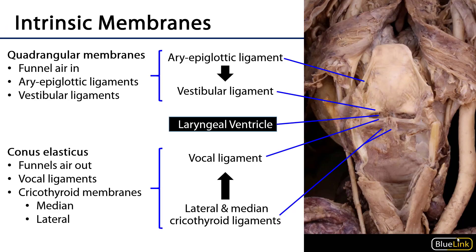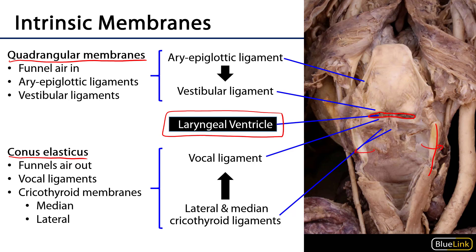There are two intrinsic laryngeal membranes: a pair of quadrangular membranes which rest superiorly, and a singular conus elasticus which rests inferiorly. It's worth noting that these two sets of membranes are separated by the laryngeal ventricle — this space here separates the quadrangular membranes above from the conus elasticus below. The posterior wall of the larynx has been incised and abducted away so we can see these features of the membranes.